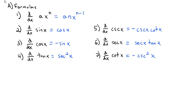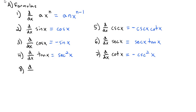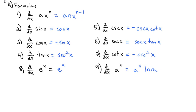A couple more formulas — we did exponentials. The derivative of e to the x is everyone's favorite, because that's just e to the x. But if the base is something different, the derivative of a to the x is still a to the x, but now we need to multiply by the natural log of the base. We can also take the derivative of the natural log of x, which is the reciprocal function, 1 over x.